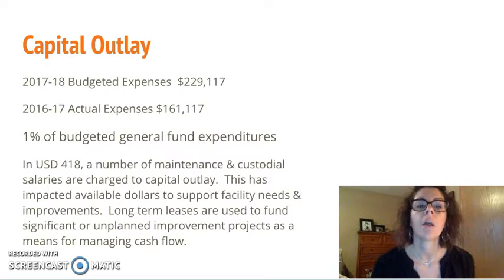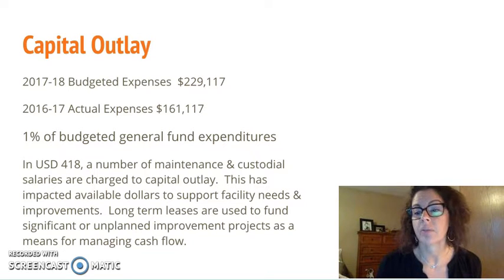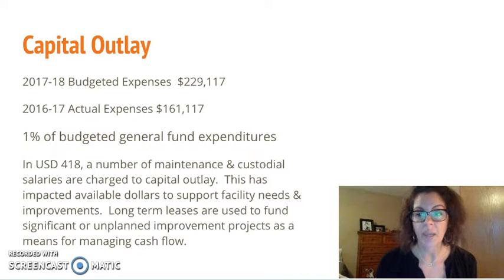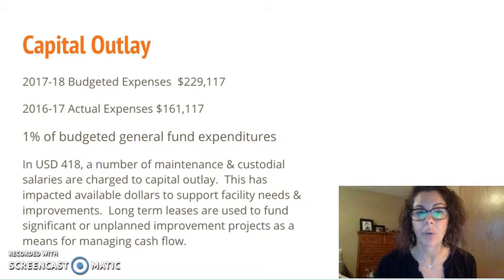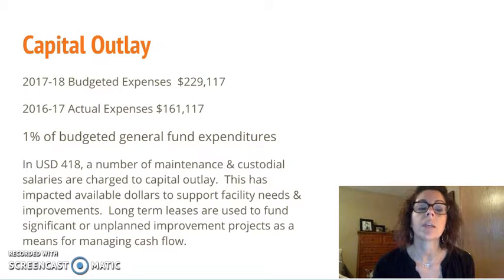Capital outlay: our actual expenses from fiscal year 17 are shown as well as what was budgeted for fiscal year 18. This accounts for about 1% of the general fund expenditures. In USD 418, I've noted that a number of our maintenance, capital, and custodial salaries are charged to capital outlay, and this has impacted the available dollars for the district to use for typical capital outlay types of projects.